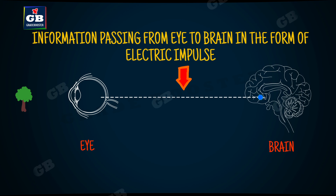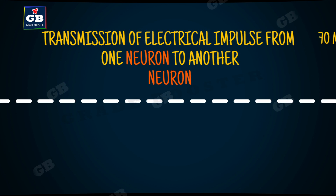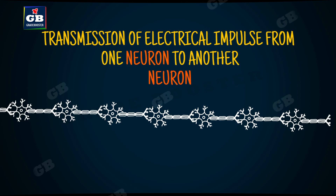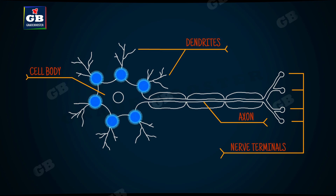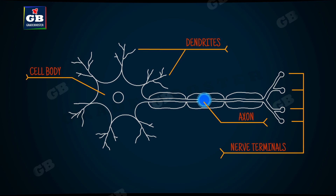How is the information carried from the eye to the brain? That is, by nerve cells. The dendrites of the neuron receive the information. The axon passes the information to the next neuron. When the dendrites of a neuron receive the information, they start a chemical reaction that generates an electric impulse. This electric impulse travels from the dendrite to the cell body, then along the axon, and finally reaches the nerve endings.